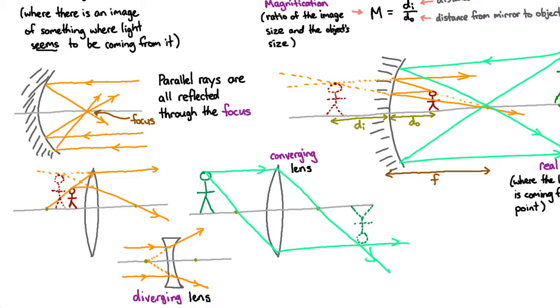You can also make images with diverging lenses following exactly the same rules. Here we have our object, and if we have a light ray that goes in parallel, it will seem to come out from this focus. And if we have a light ray that's coming out parallel on this side, then it has to be as though it was going through this focus. We can see that the two rays on this side appear to be coming from a point back here, so we have a virtual image. Once again, we're following exactly the same rules to work out where our images are, no matter where the object is in relation to the focus.